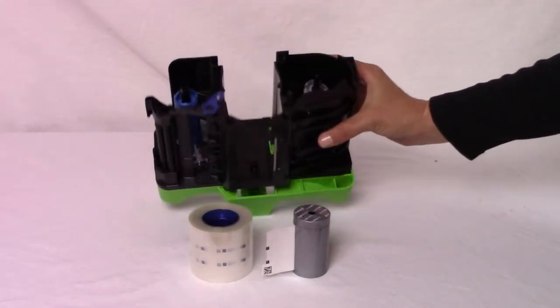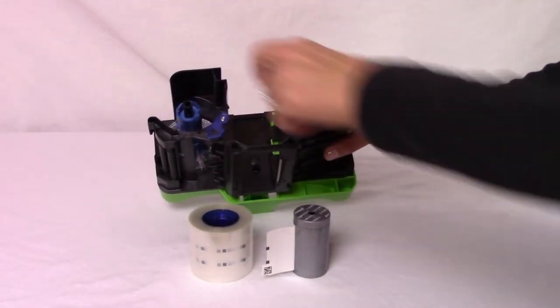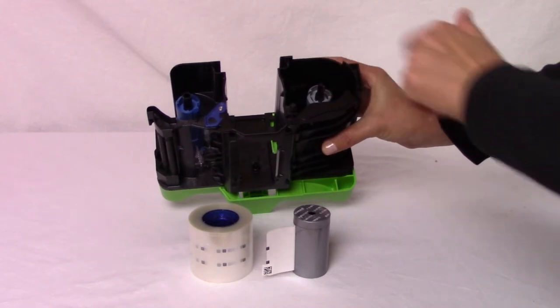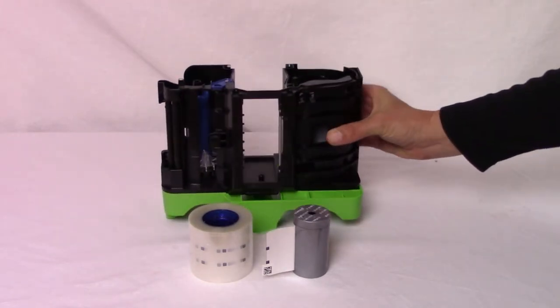The cartridge has a blue supply spindle and silver take-up spindle. The overlay supply roll goes on only one way and only fits on the correct spindle.